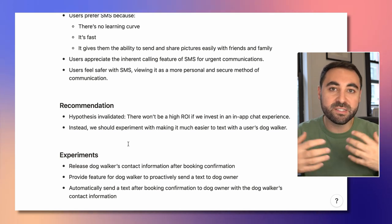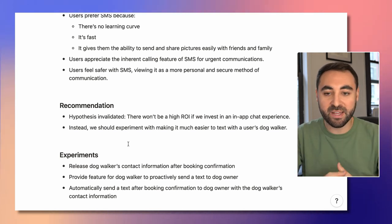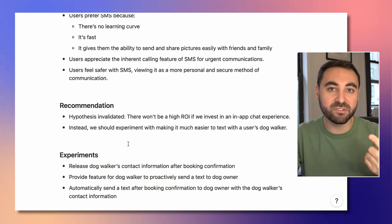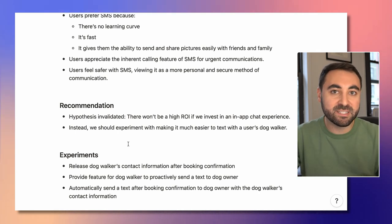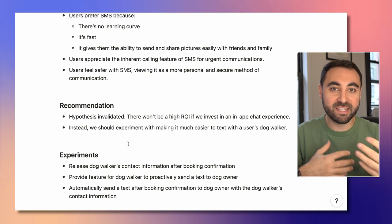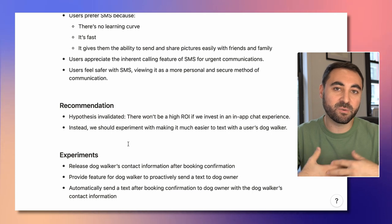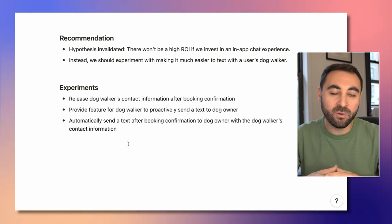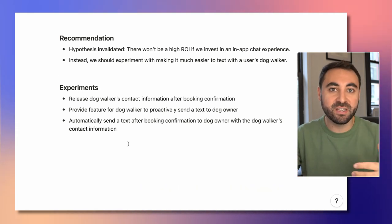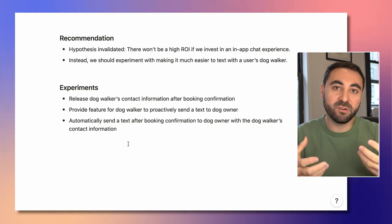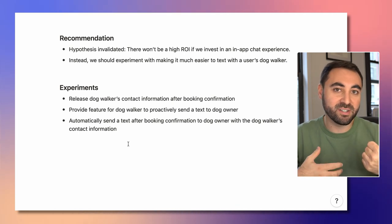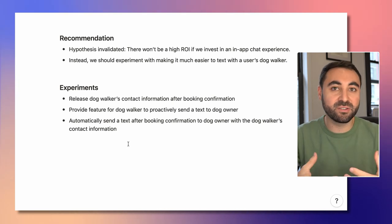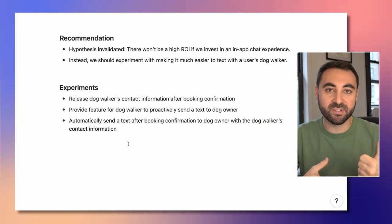Now that we've learned all of that, what is the recommendation as the product manager? Basically, from the survey results and the user interviews, we really invalidated the hypothesis that in-app chat would be a great enhancement to the user experience. Instead, we should make it really easy for dog owners to text via SMS with their dog walkers — that's going to be a higher return on investment. So we have this recommendation. Now, what experiments should we run? What features should we build? Because we do know it is still a big problem — users are dissatisfied with how they communicate with dog walkers right now, and the solution should be geared around SMS.